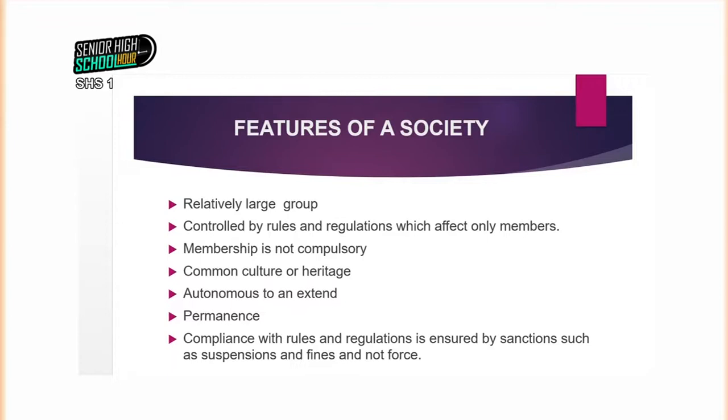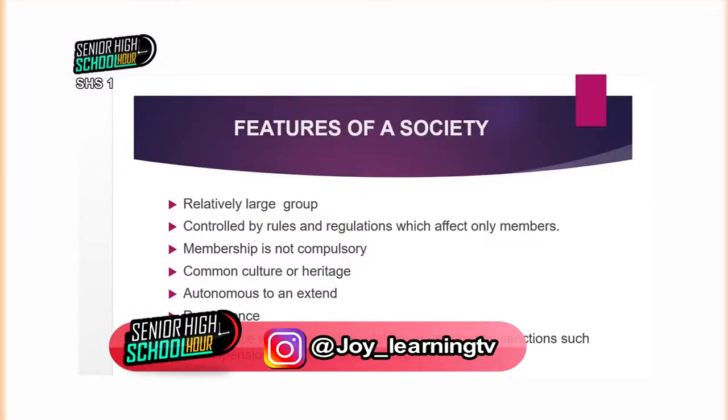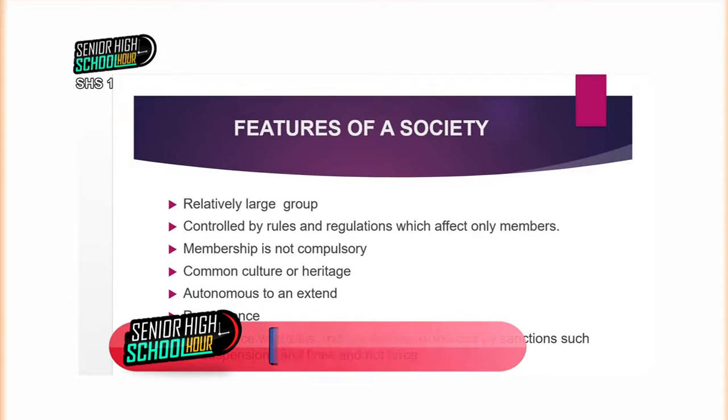It goes beyond that because of technology — people can form societies online and all that. We also say that societies are controlled by rules and regulations which affect only the members. When I say this, the rules and regulations that govern that particular society reign only for the members and not for everybody. So for example, if you were a member of a group in a church which is a society, those rules made in that society are only for the members — it is not the entire church that will be affected by those rules and regulations.